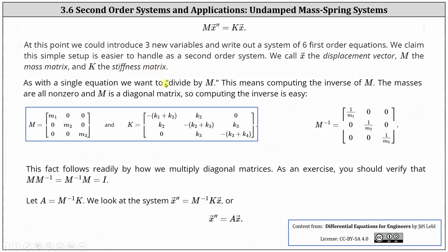As with a single equation, we want to divide both sides by M. This means we need to compute the inverse of matrix M. The masses are all non-zero and M is a diagonal matrix. So computing the inverse is easy. We simply take the reciprocal of the masses along the main diagonal shown here on the right. You may want to pause the video and verify M times M inverse and M inverse times M is equal to the three by three identity matrix.